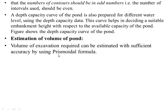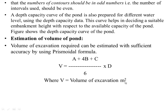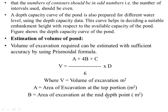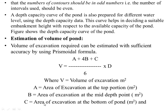For the estimation of volume of the pond, the volume of excavation required can be estimated with sufficient accuracy using the prismoidal formula: V = (A + 4B + C) / 6 × D, where V is the volume of excavation (m³), A is the area of excavation at the top (m²), B is the area of excavation at the middle depth point (m²), C is the area of excavation at the bottom of the pond (m²), and D is the depth of the pond (m).